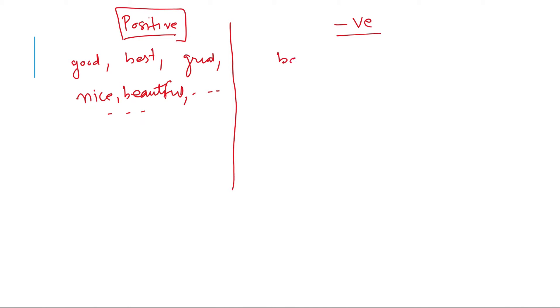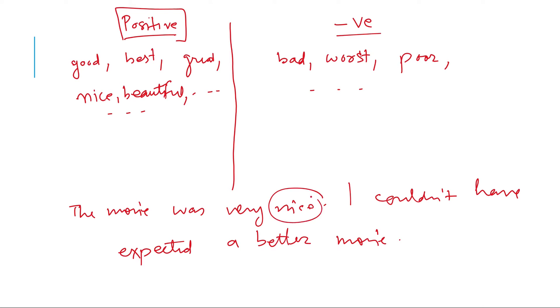Similarly, negative, you can have bad, worst, poor, and so on. So once you have your list, when you are given a sentence, let's say, the movie was very nice. I couldn't have expected a better movie.